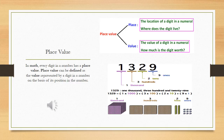Now in the next picture, we have the number 1,329. If I say 1,329, without place value I can't know what 1 is, what 2 is, what 3 is, what 9 is. So place value gives worth to a number and to each digit. In this number, 9 is the ones, 2 is the tens, 3 is the hundreds, and 1 is the thousands. If we combine all of them, we read it as 1,329.